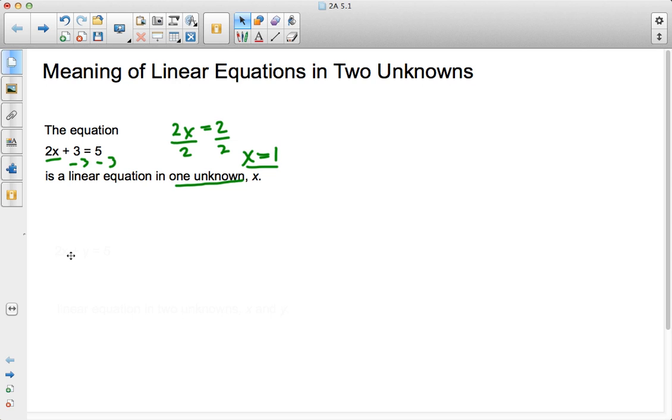But what if I were to change it up a little bit, and instead of having 2x plus 3, I had 2x plus y equals 5. Well this equation, 2x plus y equals 5, is a linear equation in two unknowns. This time I have x and y.